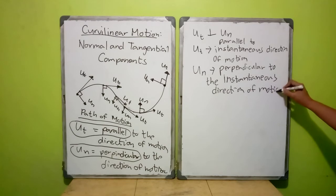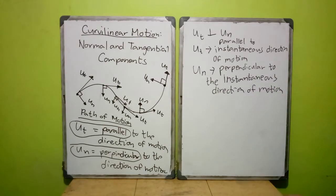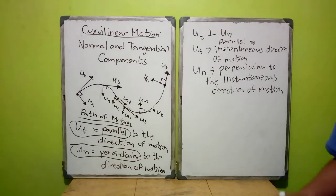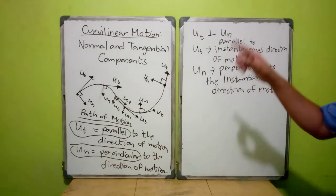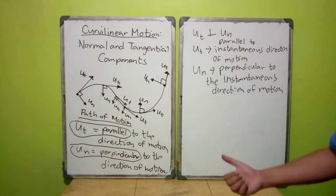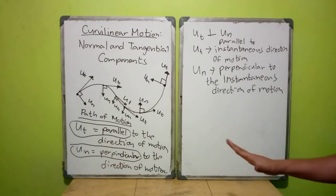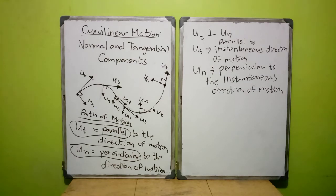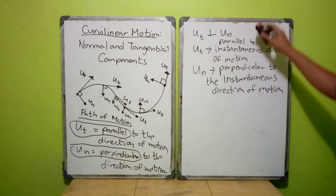That is how we define the normal and tangential components of your motion. We have no fixed x and y axis — unlike rectangular components, it does not go with a fixed x and y axis. It always goes with the direction of your motion: tangential is parallel to your motion, and normal is perpendicular to your motion. Now I will introduce the formulas.